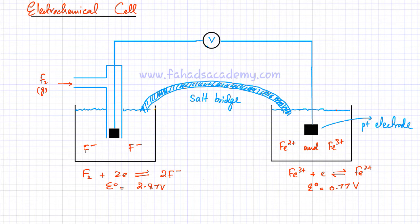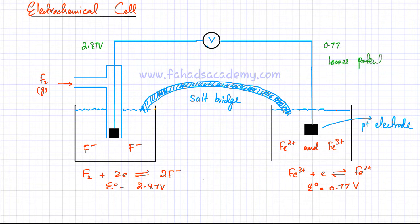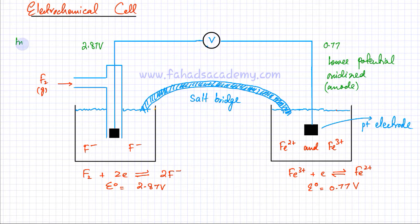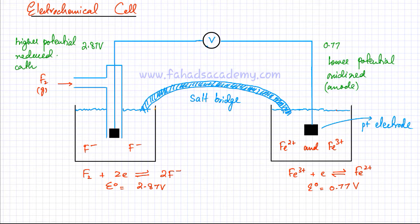So let me write those values down. This electrode has a 2.87 volt E-nought value, and the other side has an E-nought value of 0.77 volts. As discussed earlier, the lower the E-nought value — the lower potential — this would have a higher tendency to lose electrons or get oxidized. So the lower potential side has a very high tendency to get oxidized, and anything that's getting oxidized is called the anode. The higher potential side would have a higher tendency to get reduced, and the side that is getting reduced is called our cathode.